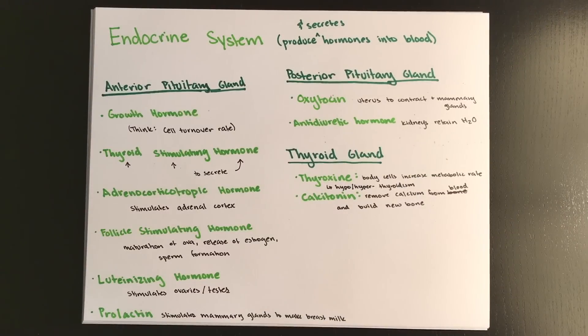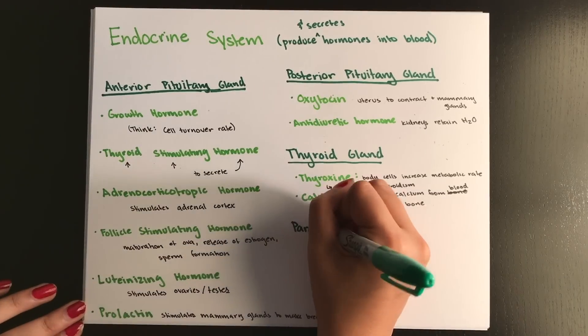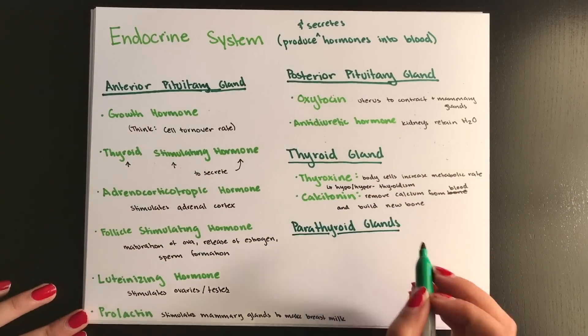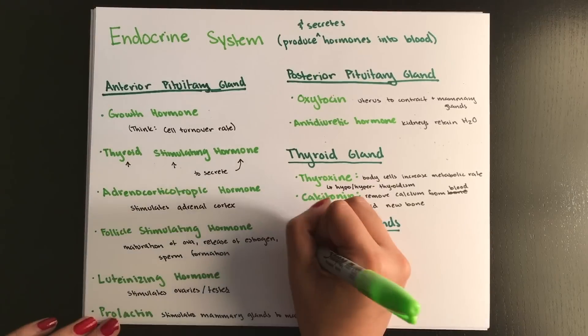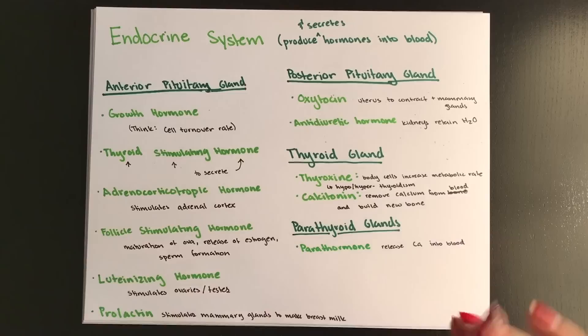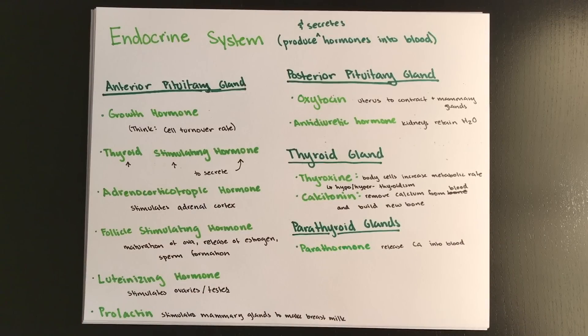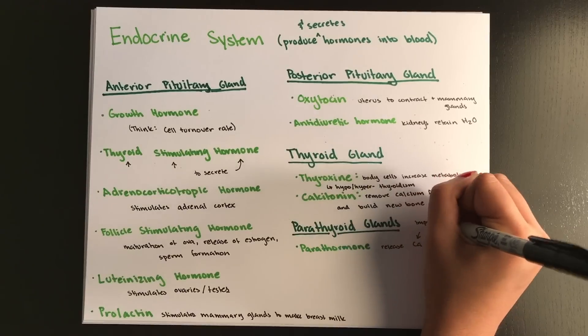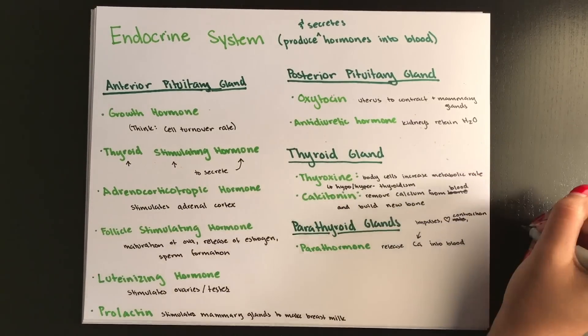Now, there are four parathyroid glands in the body found on the back of your thyroid gland, and they secrete parathyroid hormone, which is also known as parathormone. And its purpose is to release calcium into the blood by dissolving bone, which is super weird to think about. You don't think about your bones being dissolved, but that's kind of what this does. And the reason we have these two hormones dedicated just to calcium is because calcium is really important in your nerve impulse conduction, heart contraction, blood clotting, and a bunch of other bodily functions.